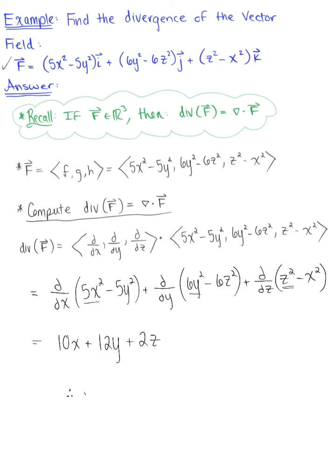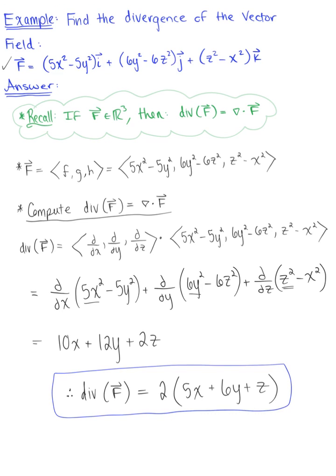We can say that our final answer here, the divergence of this vector field F is equal to, and making this look even nicer, I'm going to factor out that greatest common factor of 2. So we have 2 multiplied by 5x plus 6y plus z. And this is our final answer for the divergence of this vector field in space.